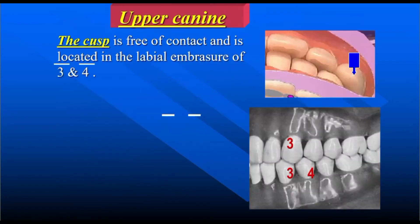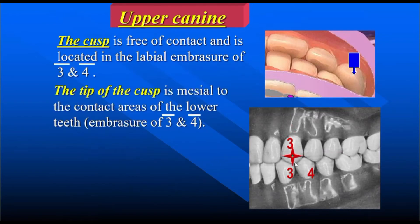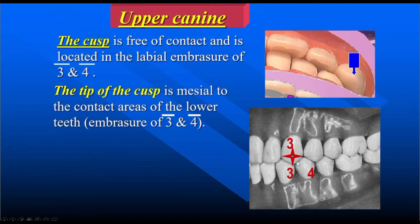Upper canine: the cusp tip is free — not contacting anybody — just hanging over the buccal surface of the lower canine and lower lateral incisor. The tip of the cusp lies between the embrasure of the lower three and lower four, i.e., in line with the labial embrasure of lower three and lower four. The tip of the cusp is actually a little bit mesial to the contact area of the lower three and lower four embrasure.